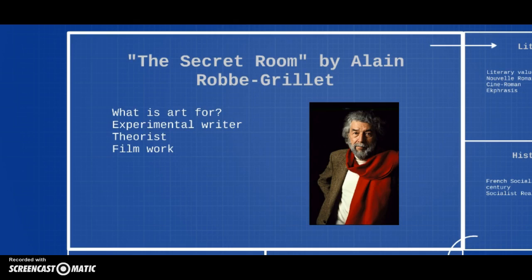Obviously Robbe-Grillet is an experimental writer, not just a writer of fiction but also a theorist, so I'll be quoting from some of his theoretical works about writing that he put out. And he also ended up working a lot in film, so I don't know if you've ever seen a film called Last Year at Marienbad, but it's one of the greatest films ever made, and it's full of the same kind of approach to art that Robbe-Grillet takes in the story that we have today called The Secret Room.